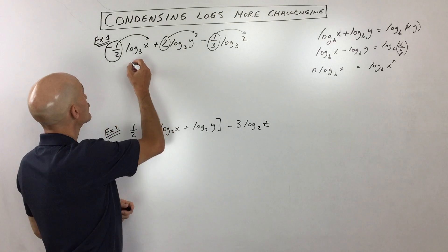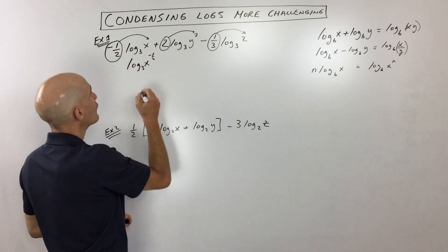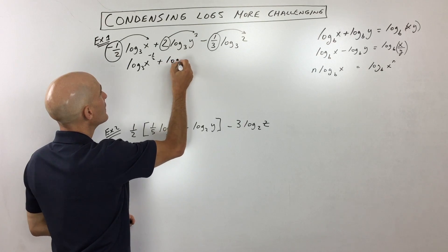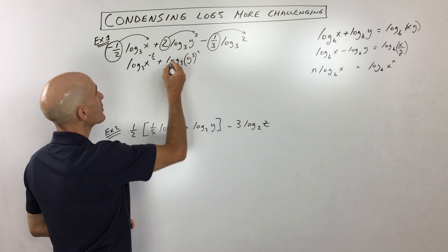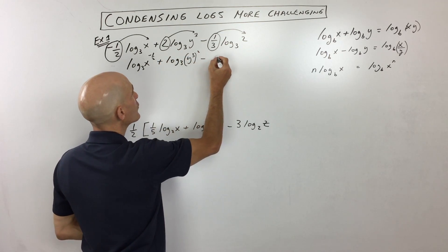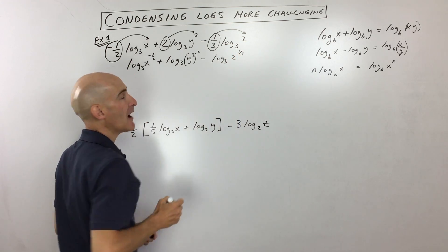So if we simplify that a little bit further, you can see this is going to be log base 3 of x to the negative 1 half plus log base 3 of y cubed squared, because I brought that 2 up, and then over here we have minus log base 3 of 2 to the 1 third power.